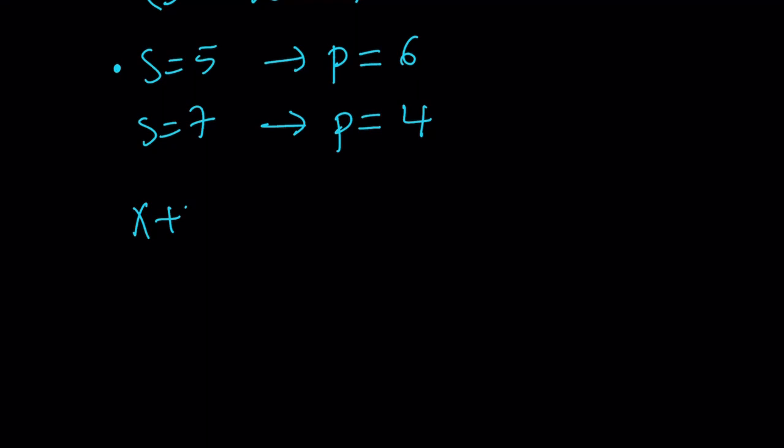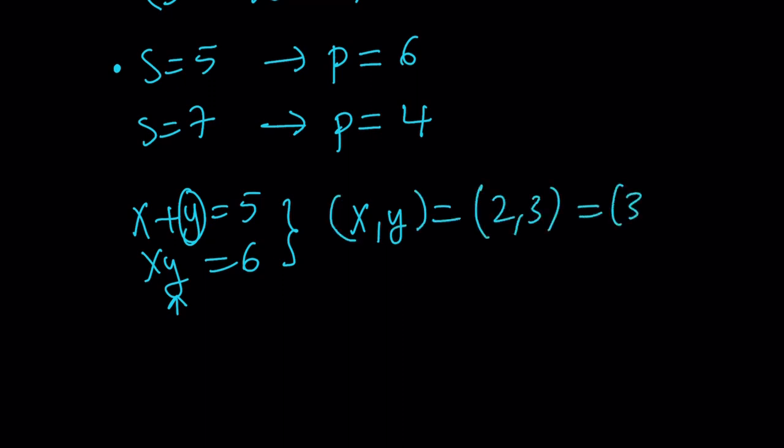So I got x plus y equals 5 and xy equals 6. Now obviously here you can isolate y and write it as 5 minus x and substitute that here. Or you can just think about it this way. I'm looking for two numbers whose sum is 5 and whose product is 6. And obviously those numbers are 2 and 3.